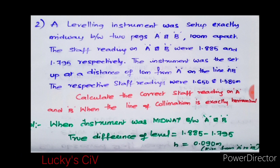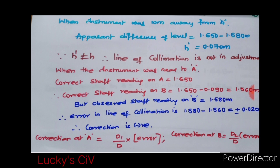When the instrument was 10 meters away from A, the apparent difference of level H-apparent is 1.650 minus 1.580, which is 0.070. This is called apparent difference because the instrument is near to A, not near to B. Near to A means there will be no error at A, but there will be an error at B.